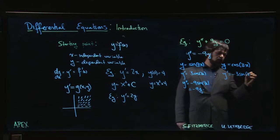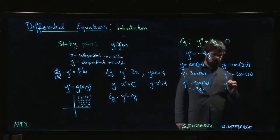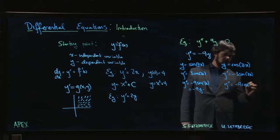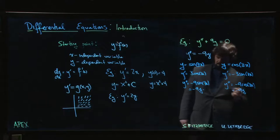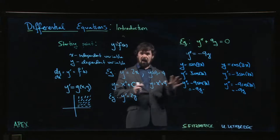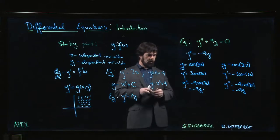Same story over here. Y prime is going to be minus three sine three x. Y double prime, minus nine cos three x, which is minus nine y. And we're back to where we started.